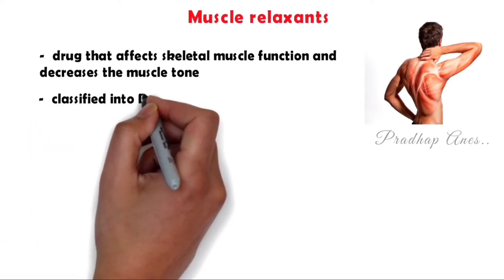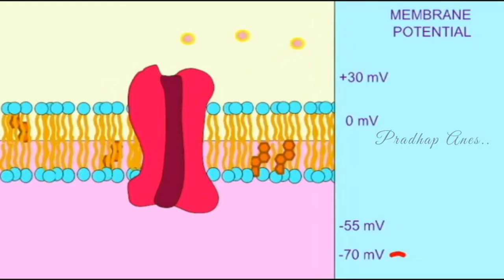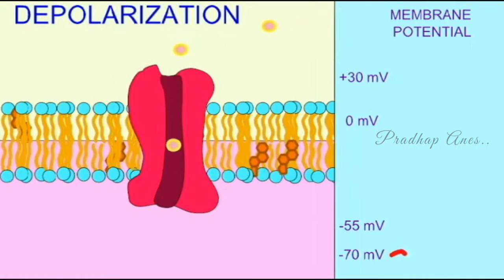Muscle relaxants are classified into depolarizing and non-depolarizing. Depolarization occurs when ion channels in the membrane open or close, altering the ability of particular types of ions to enter or exit the cell. The opening of channels that let positive ions flow into the cell can cause depolarization.